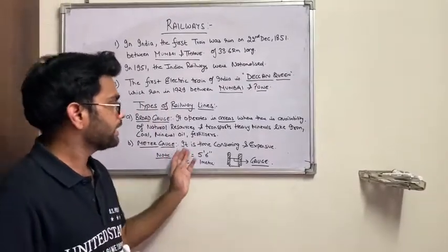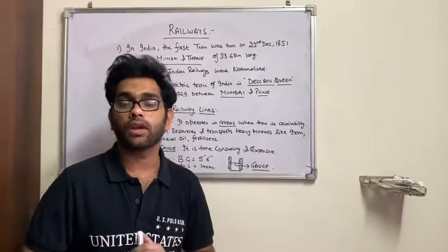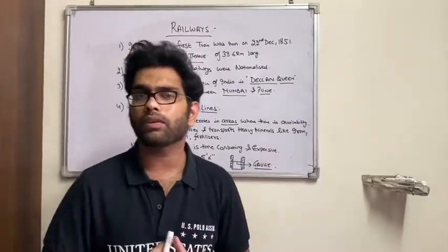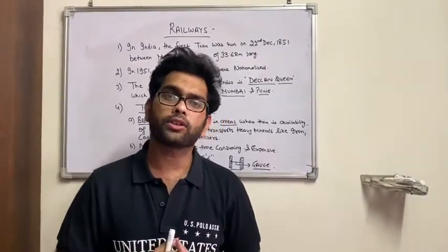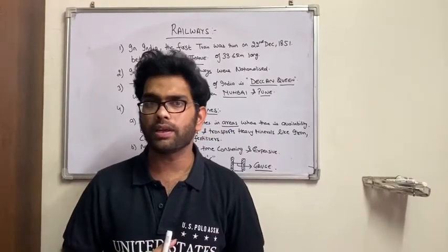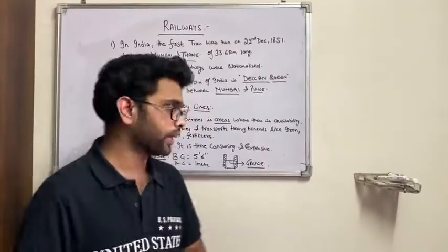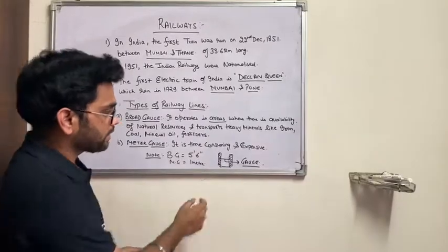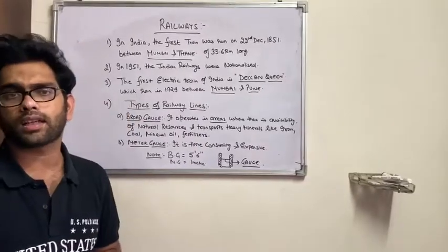The second term is meter gauge. It is time consuming and expensive. Meter gauge was already made, but it was found that it is time consuming and expensive rather than broad gauge. And its distance is almost 1 meter or you can say it is 1000 mm.